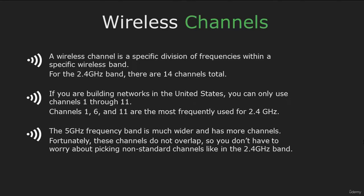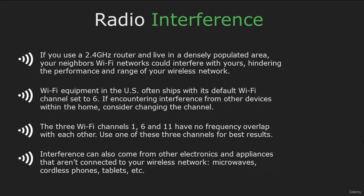Unlike the 2.4 GHz band, you don't have to worry about picking non-overlapping channels. Now that you know about channels and different bands, you will need to know how to avoid radio interference. If you live in a populated area, your neighbor's Wi-Fi could interfere with yours, so change the default Wi-Fi channel and use 1, 6, and 11. These three channels have no frequency overlap. Interference can also come from other electronics such as microwaves, cordless phones, tablets, and so on.